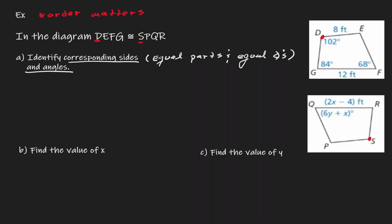And if I move on to the next letter, the second letter is E of the first object, and the second letter is P on the second object. So that implies that angle E is congruent to angle P. This is what I mean by the order matters.